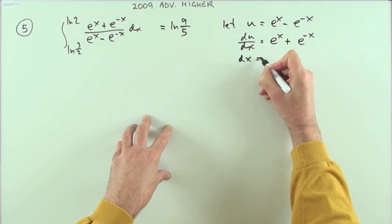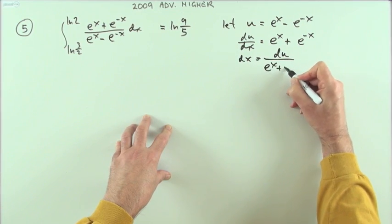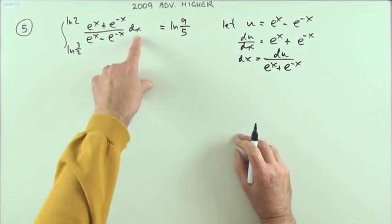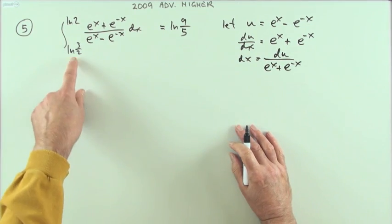So I've got dx equals du over e^x + e^(-x). So that's that part taken care of, that's that part taken care of, and that's also the other part taken care of.